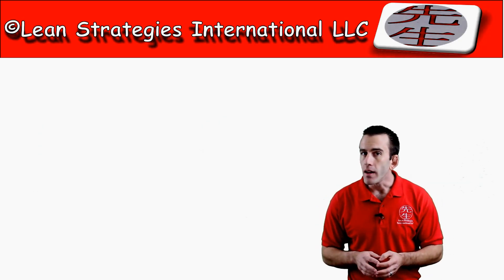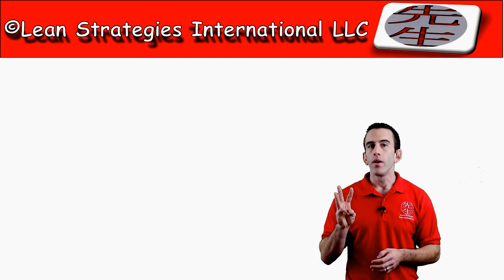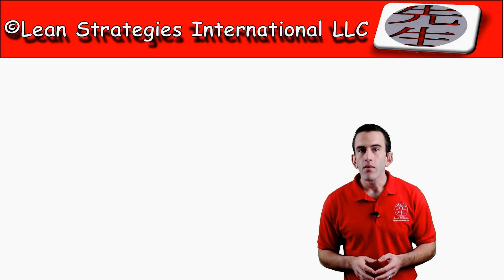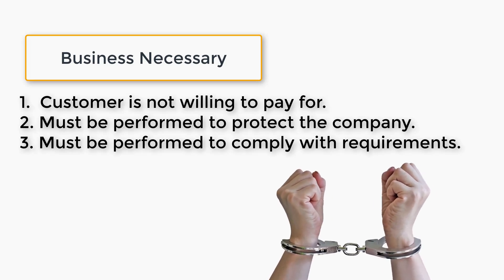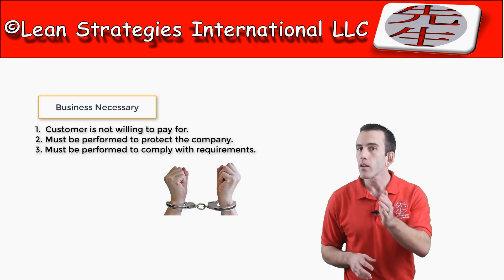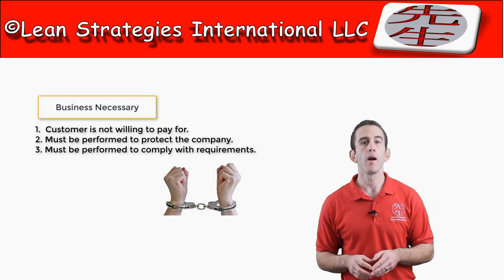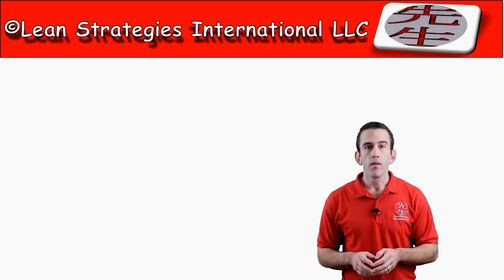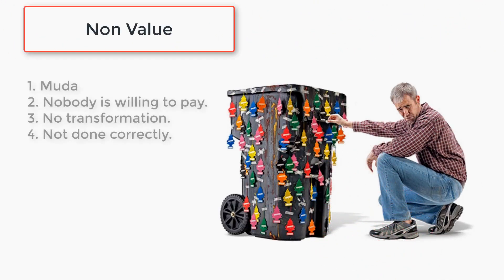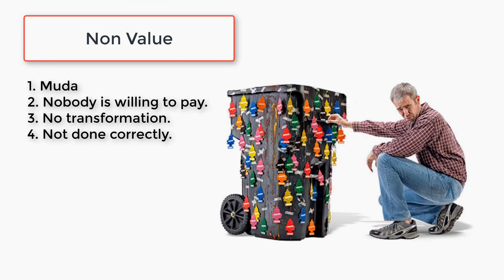Activities that do not have these three qualities are referred to as business necessary or business value-added activities. These are work that your customer is not willing to pay for; however, they must be performed as a necessary precaution to protect the business or comply with requirements. Our third and final category is non-value — wasteful activities referred to in lean as muda.